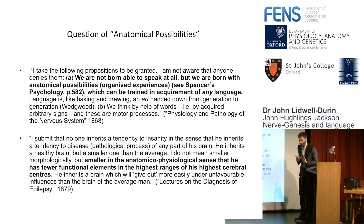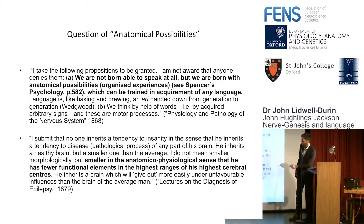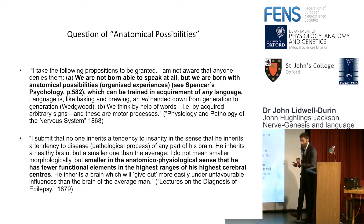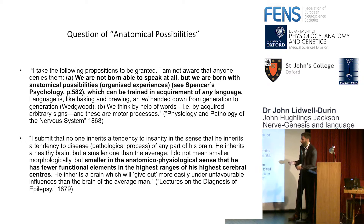To give Jackson his credit, Jackson's writing gives us a very strong indication that he does not think that five is on the platter. He tells us in 1868: I take the following propositions to be granted — we are not born able to speak at all, but we are born with anatomical possibilities which can be trained in the acquirement of any language. So that tells us something about how Hughlings Jackson views anatomical possibilities: all of humanity is on a level, everybody can learn English. But there's a trick to anatomical possibilities that comes out in his later work.